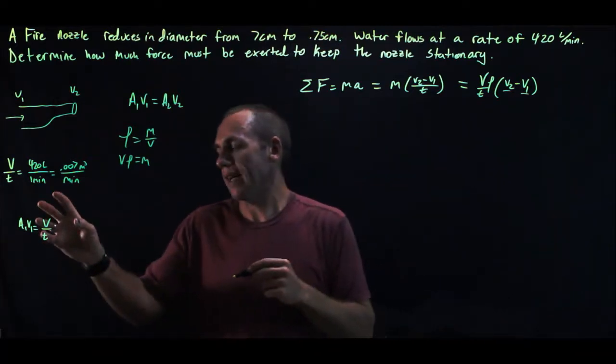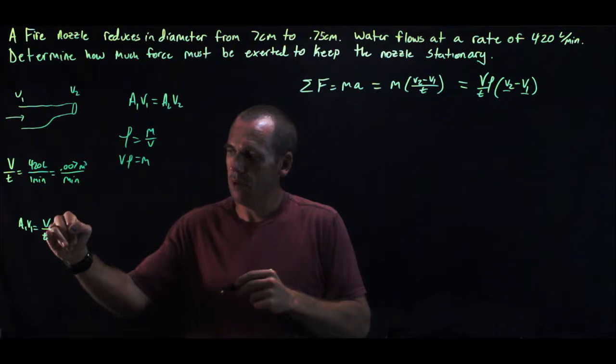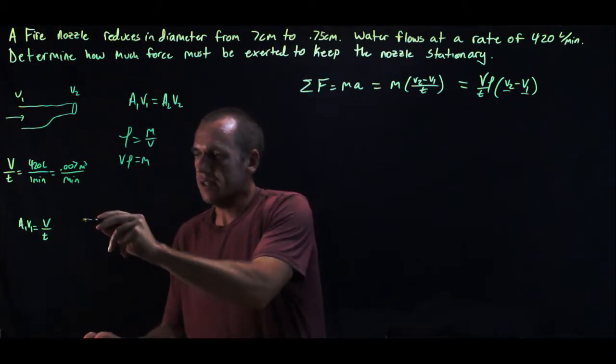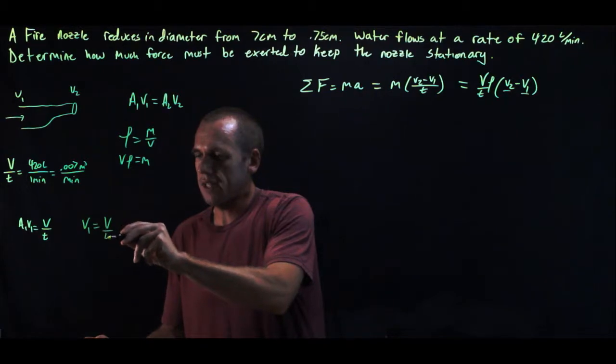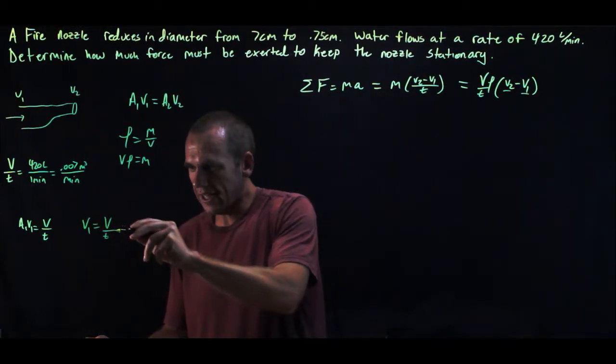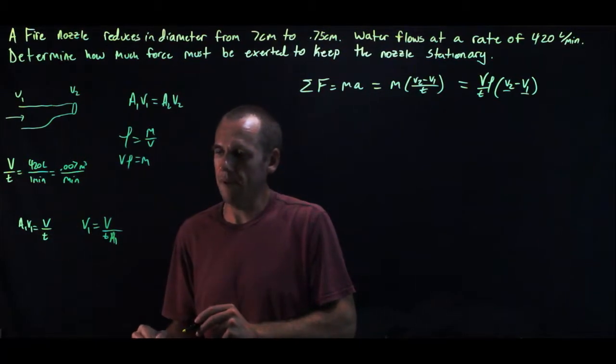Well, that comes from back here. A1 V1 equals the volume rate of flow. So that tells me V1 is equal to volume divided by time divided by A1, if I just divide both sides of that equation by A.